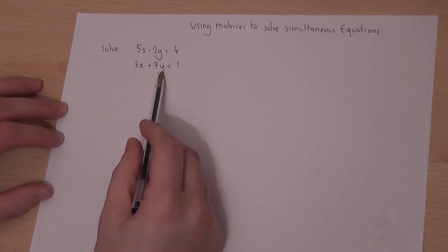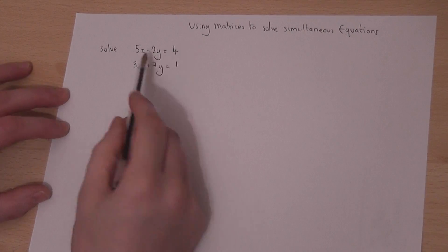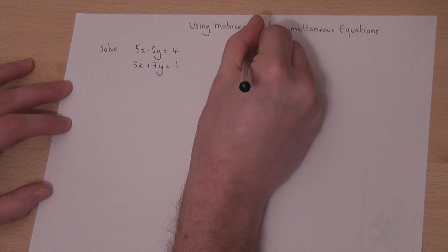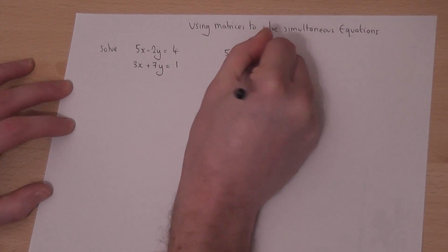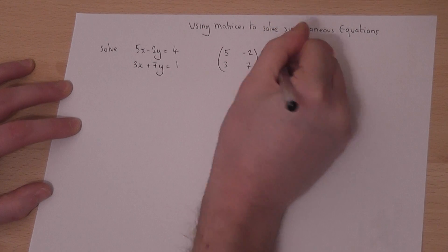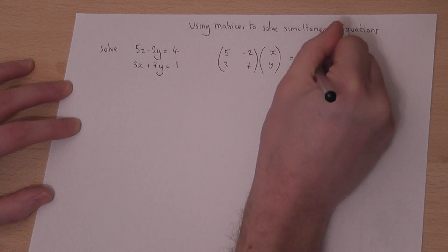This video looks at how we can use matrices to solve a pair of simultaneous equations. We can write this in the form 5, minus 2, 3, 7 - these are the coefficients - with xy equal to 4, 1.